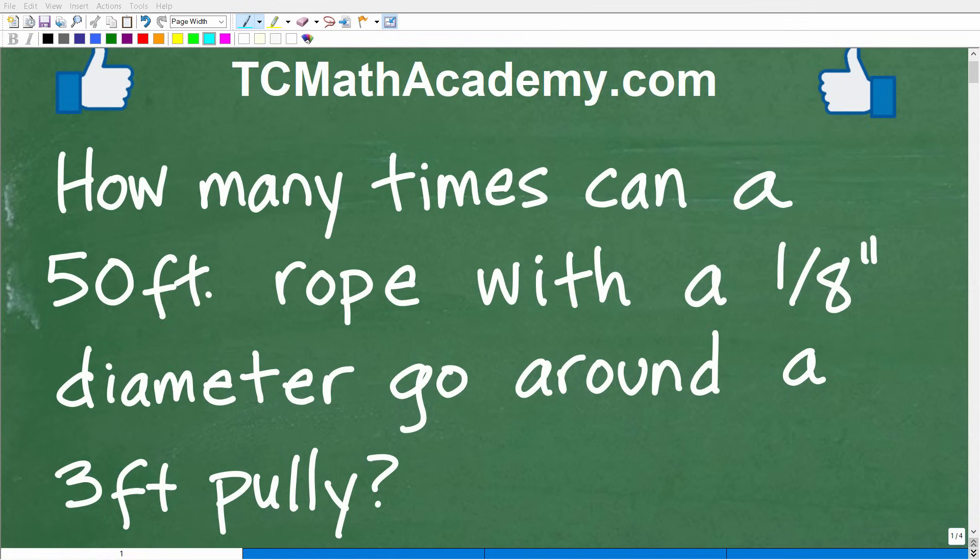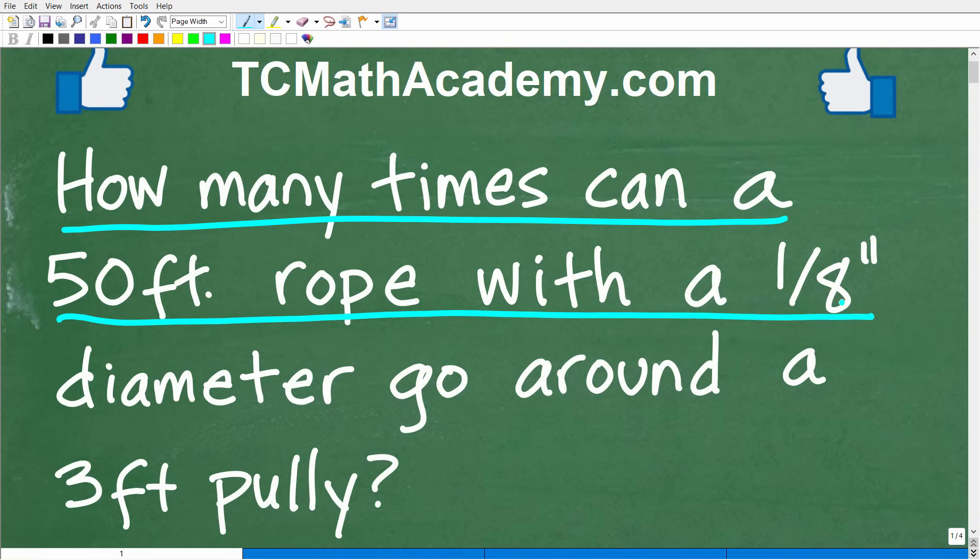Okay, so let's go ahead and put your math knowledge and skills to work to figure out this nice, interesting math word problem. Matter of fact, let me go ahead and read the problem here. It is the following: How many times can a 50-foot rope with a 1/8-inch diameter go around a 3-foot pulley?